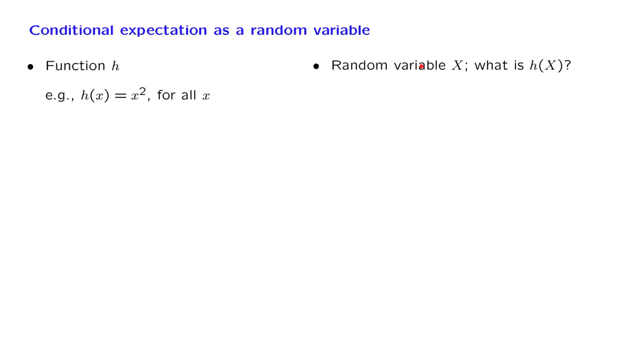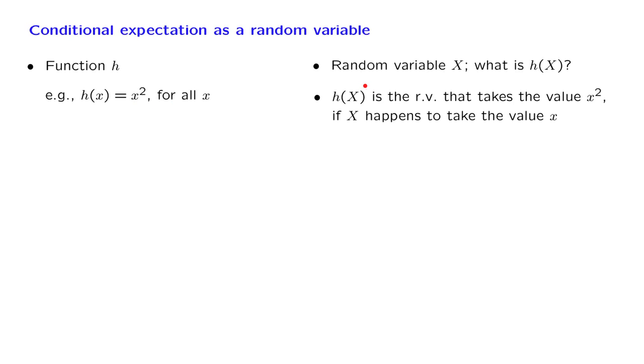Consider now a random variable capital X. What do we mean when we write h(X)? For h defined, for example, as the quadratic function, h(X) is defined to be a random variable. Which random variable? It is the random variable that takes the value little x squared whenever capital X, the random variable, happens to take the value little x. And this is the random variable that we usually denote as the random variable X squared.